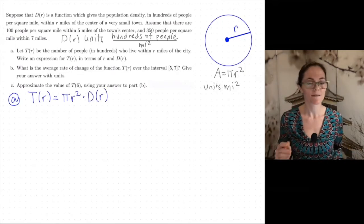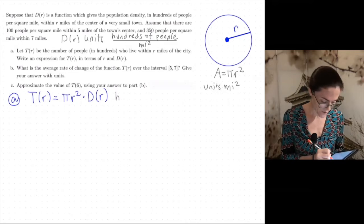And so T(r) is pi r squared times D(r). That will give us hundreds of people for the units.